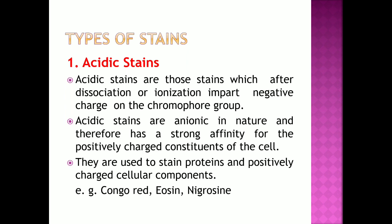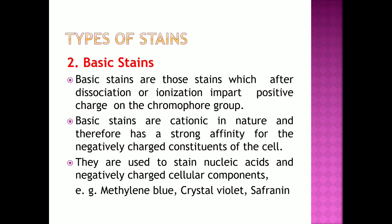Examples of acidic stains are Congo red, Eosin, Nigrosin, etc. Basic stains are those stains which after dissociation or ionization impart a positive charge on the chromophore group. Basic stains are cationic in nature and therefore have a strong affinity for the negatively charged components of the cell. They are used to stain nucleic acids and negatively charged cellular components. Examples of basic stains are methylene blue, crystal violet, safranin, etc.